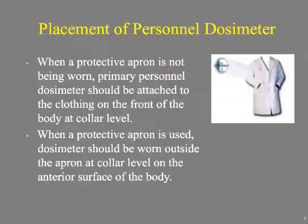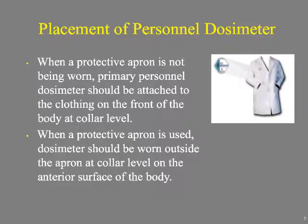We know these need to be worn at collar level. It's recording what we call an eye dose, and the only way to do that accurately is to have it close to the eyes. The thyroid is also very radiosensitive, so proximity to that organ matters. If wearing a lead apron, technologists need to wear the dosimeter on the outside of the apron.